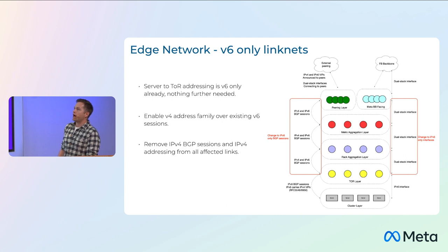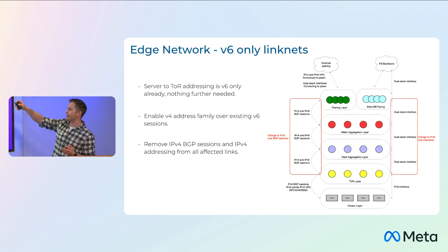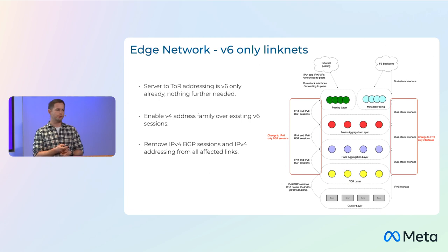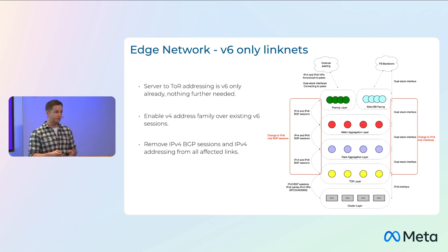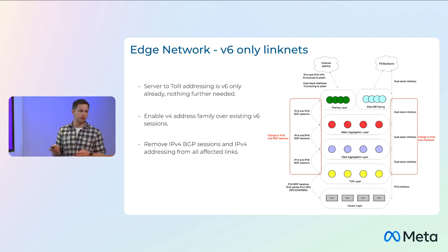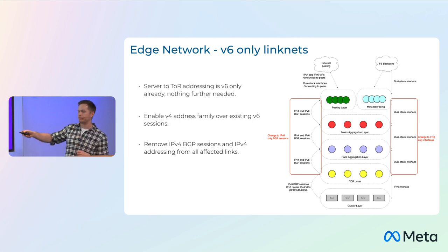So what did we do? There's nothing revolutionary here. Previously those layers were dual stack. The plan is to remove the V4 addresses, shut down the V4 BGP sessions, and carry any V4 VIPs and virtual IP addresses we need to communicate to the internet via the V6 BGP sessions. Again, this is RFC 5549 / 8950 — V4 routes but with a V6 next hop — exactly the same thing we had already done between our servers and top-of-rack switches.